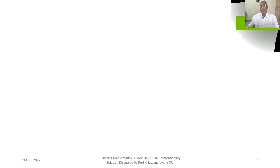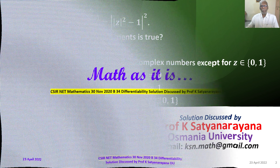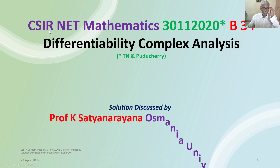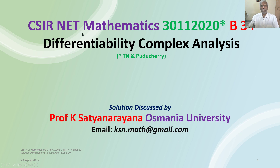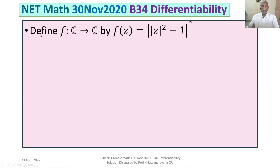We now discuss the solution of a problem from the section on complex analysis. This problem is on the differentiability of a given function. It appeared in the CSIR National Eligibility Test held on 30th November 2020, from section B. The problem is: define f, a function from ℂ (the set of complex numbers) to ℂ, by f(z) = ||z|² - 1|².